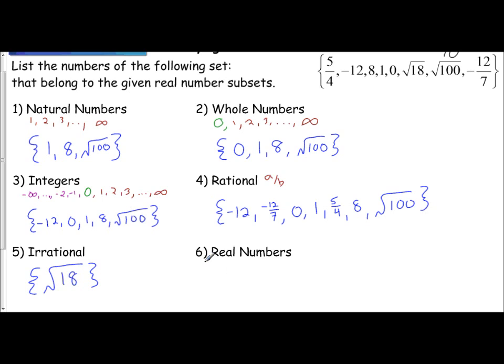The last one is your real numbers. Your real numbers are any number that you know of right now that exists. So again, numerical order, that is every single number in this set: negative 12, negative 12 sevenths, 0, 1, 5 fourths, the square root of 18, the number 8, and the square root of 100.